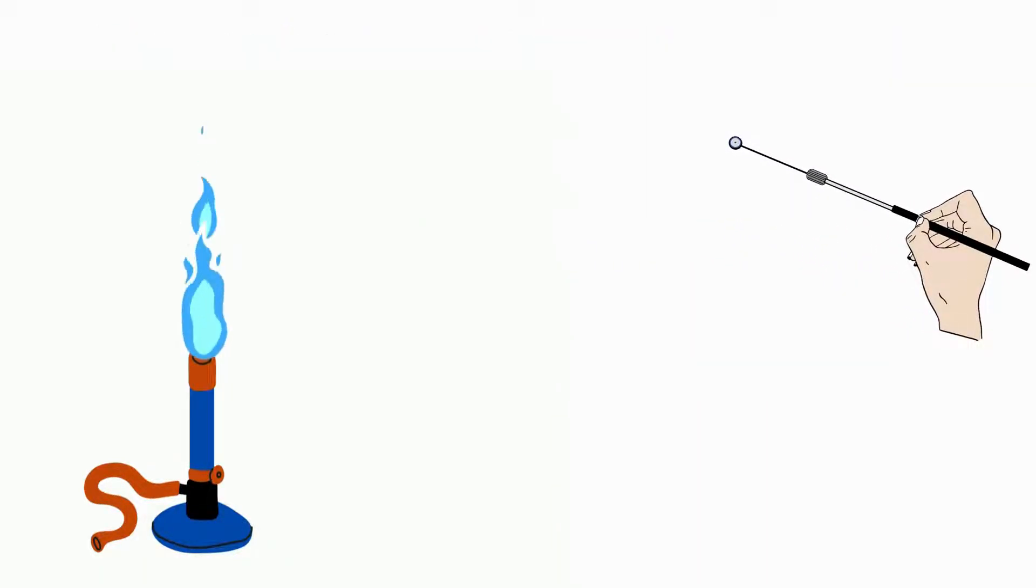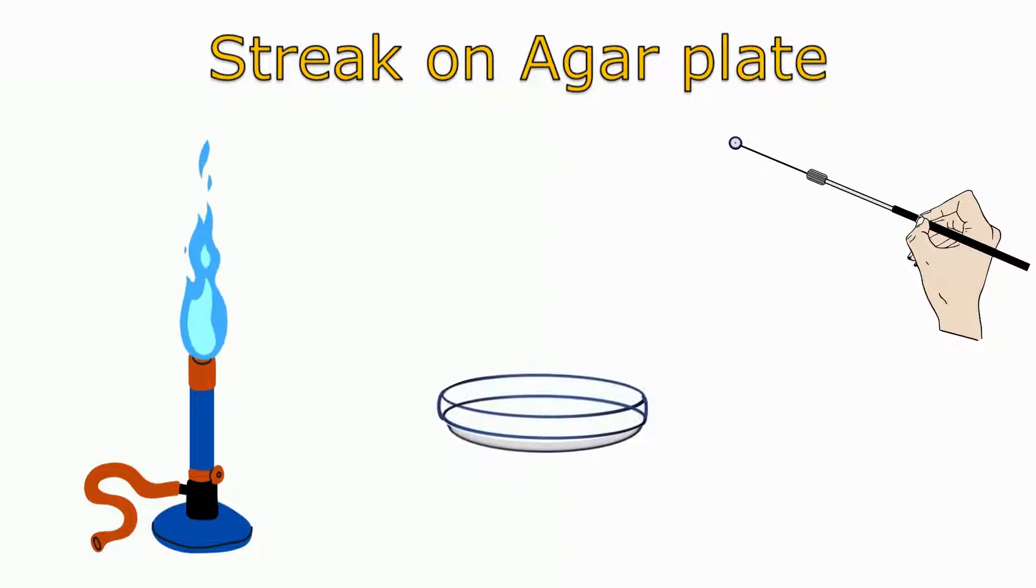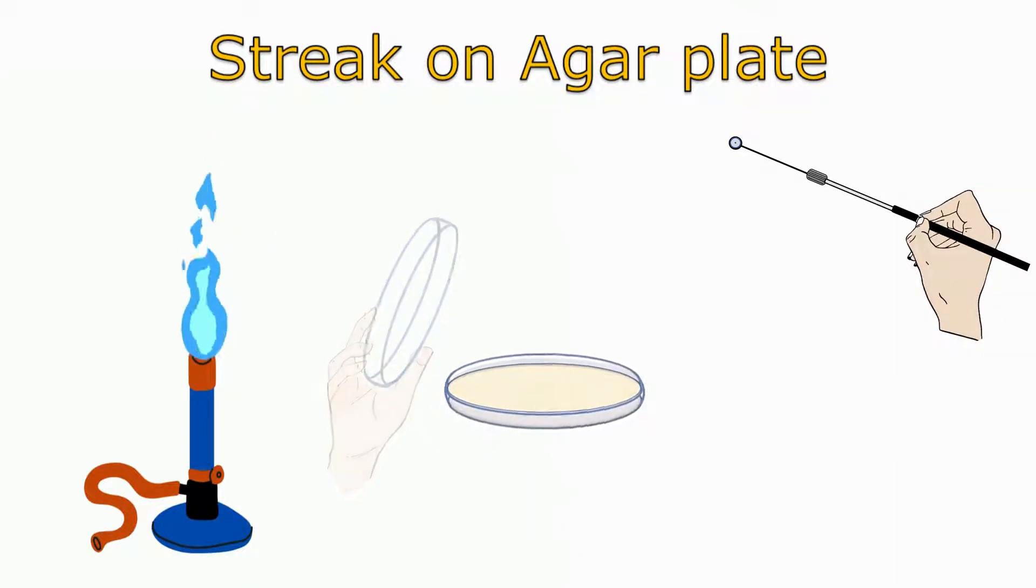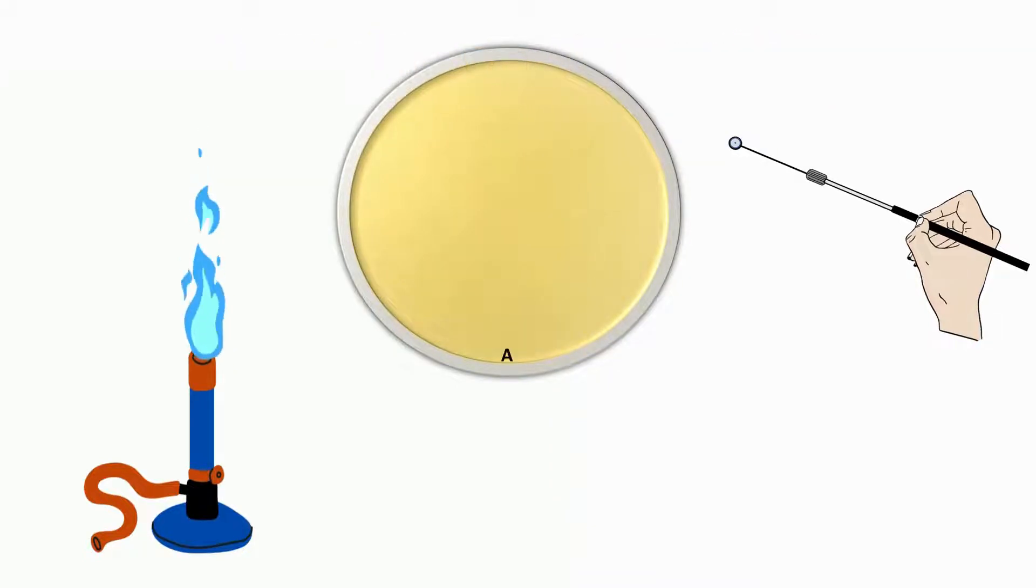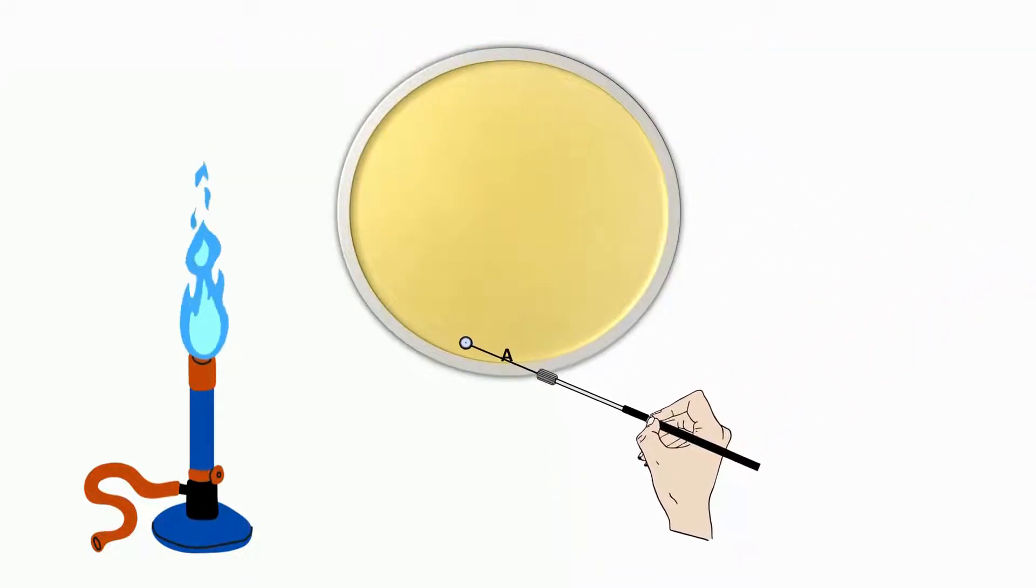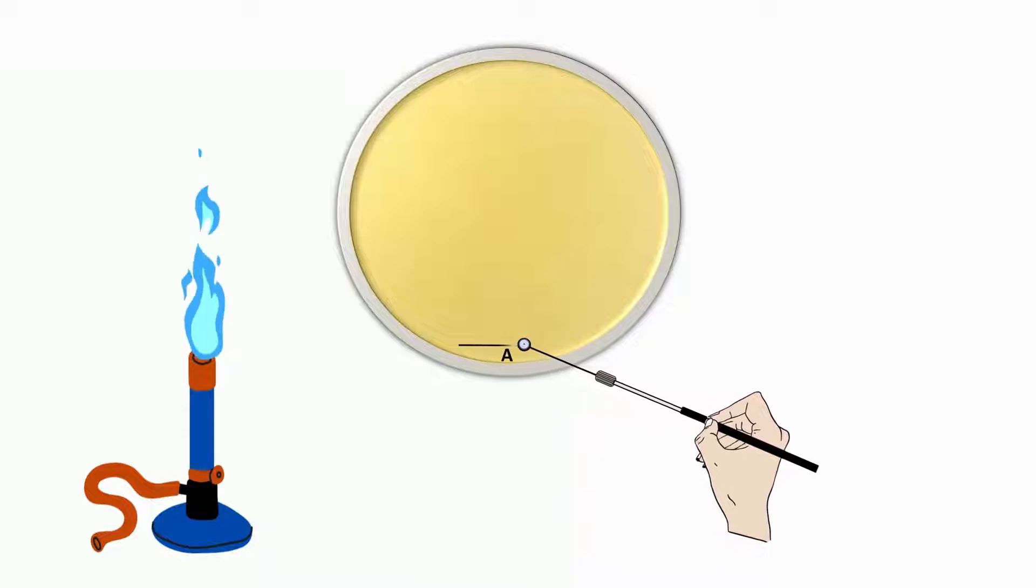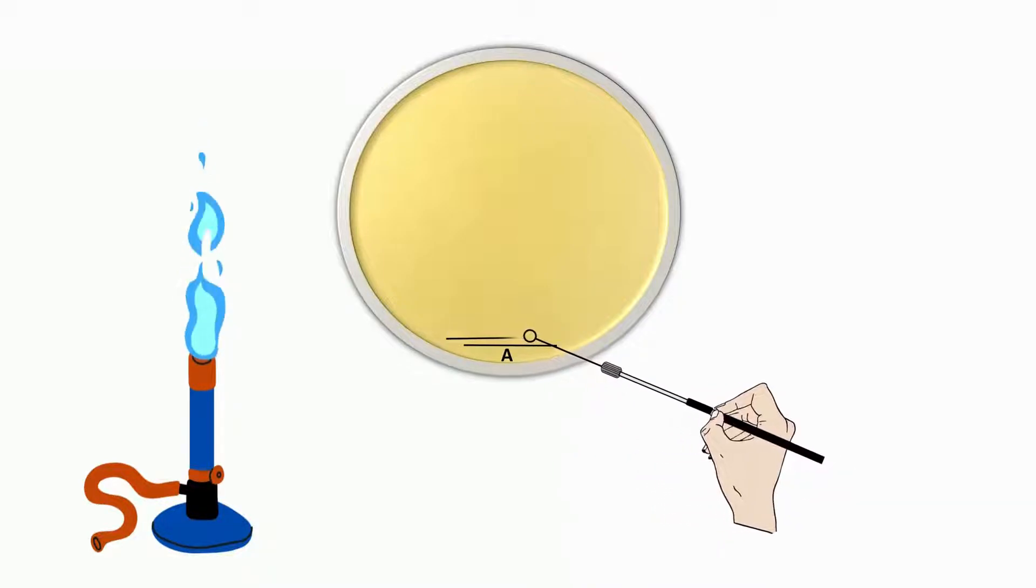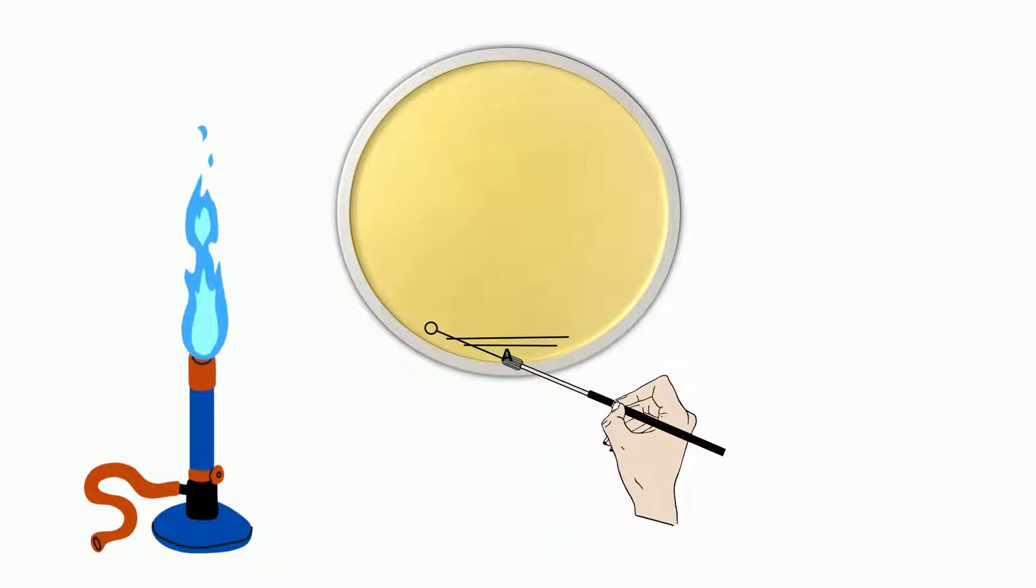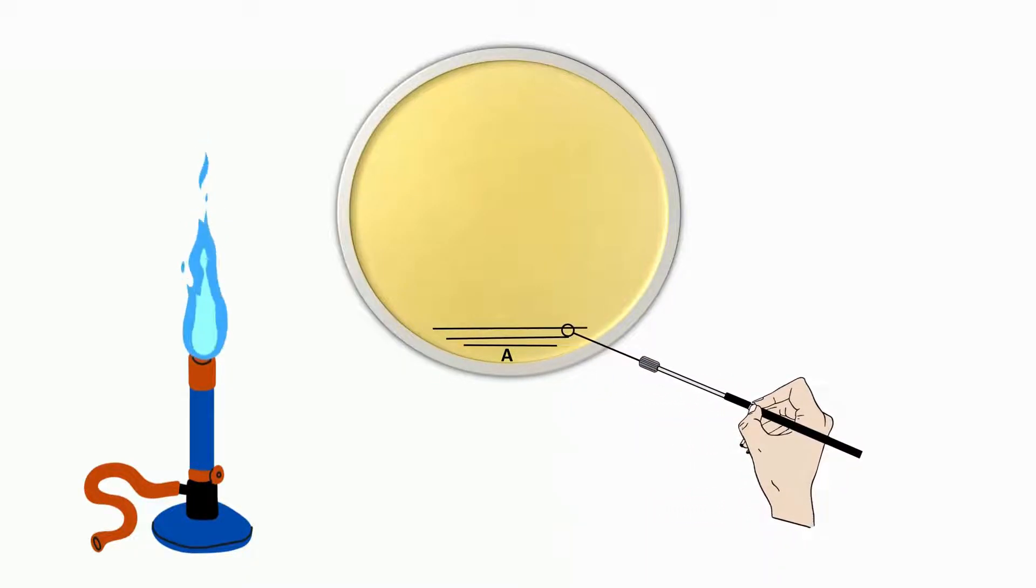Now take a sterile and dry nutrient agar plate. Open the lid of the agar plate for inoculation. Place the wire loop containing bacterial sample near the edge of the petri plate in area A. First make three to four small streaks in area A.